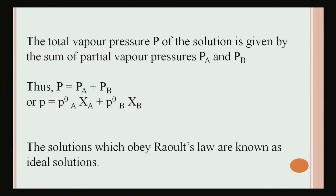The total vapor pressure P of the solution is given by the sum of partial vapor pressures P_A and P_B. So, P = P_A + P_B, which by substitution gives P = P°_A · X_A + P°_B · X_B. The solutions which obey Raoult's law are known as ideal solutions.